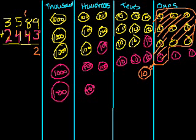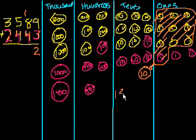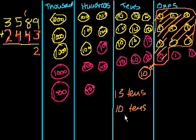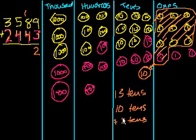So let's see what happens in the 10s place. We have 1, 2, 3, 4, 5, 6, 7, 8, 9, 10, 11, 12, 13 tens. So 13 tens — that's the same thing as 10 tens plus 3 tens. So why don't I take 10 of the tens and convert them to 100.